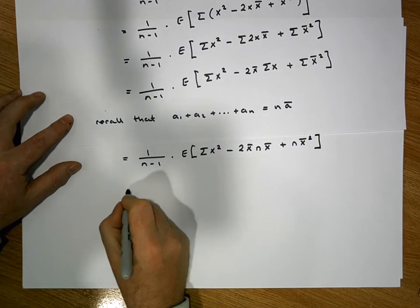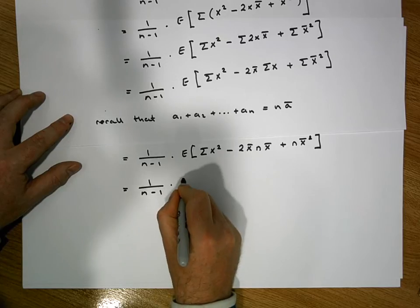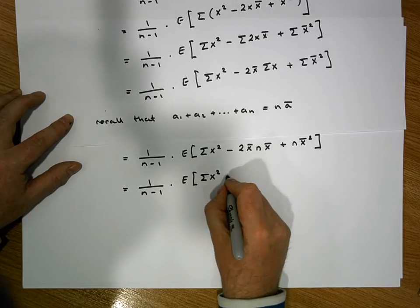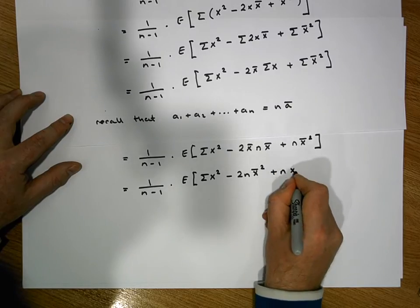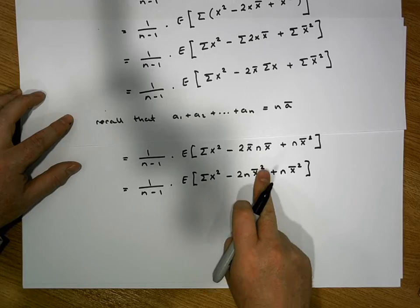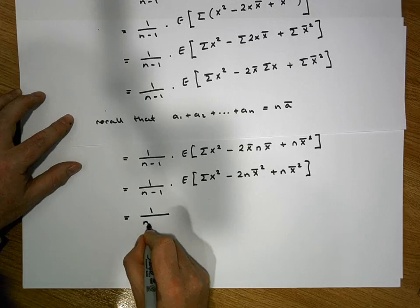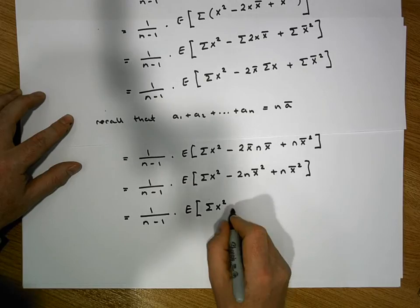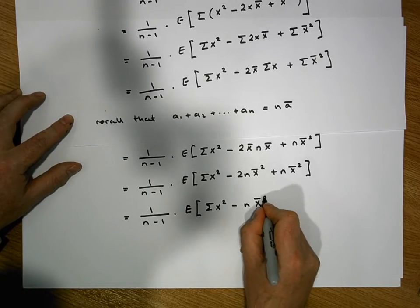We need to calculate — let's simplify. This is equal to 1 over n minus 1 times the expected value of the summation of the x squareds, minus 2 times n times x-bar squared, plus n times x-bar squared. The minus 2n x-bar squared and plus n x-bar squared leaves us with minus one of them, so this becomes 1 over n minus 1 times the expected value of the summation of x squared terms minus n times the x-bar squared terms.